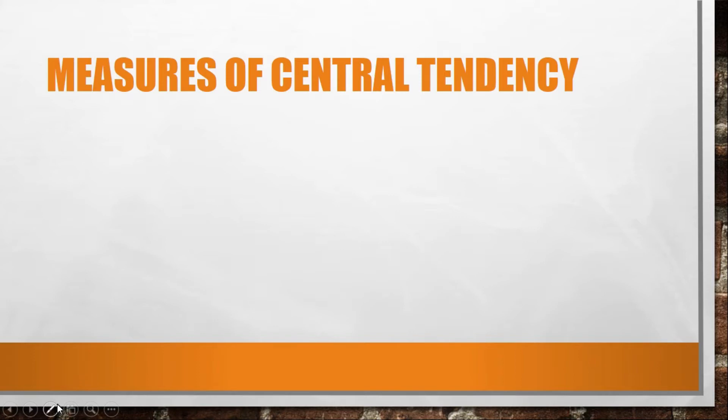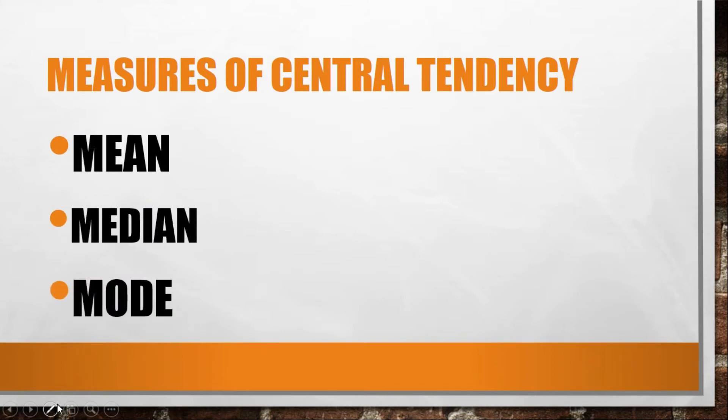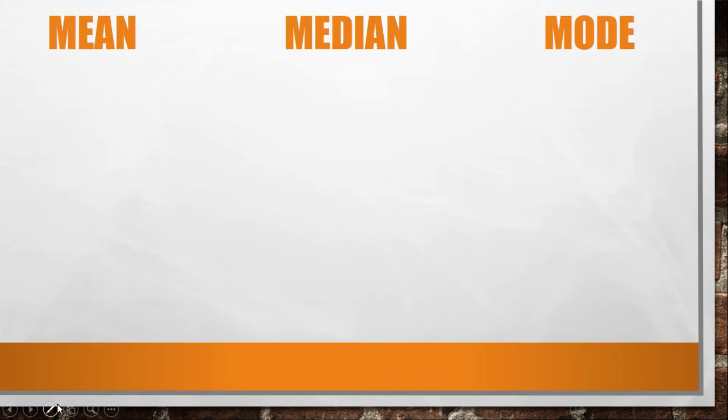The measures of central tendency, as I have said earlier, there are three aspects: the mean, the median, and the mode. It differs from what we have discussed last meeting in terms of formula. For mean, we use this formula: x̄ equals the summation of fx over the summation of f.